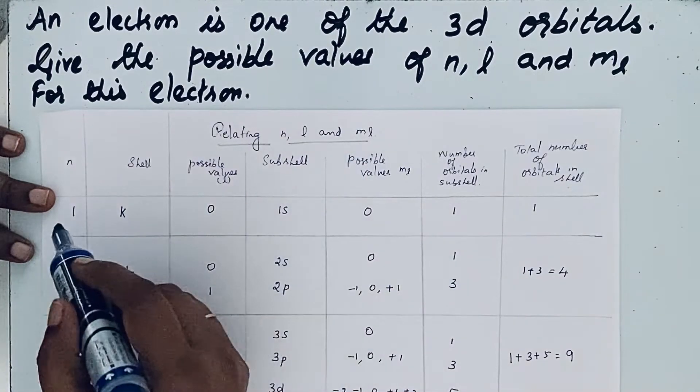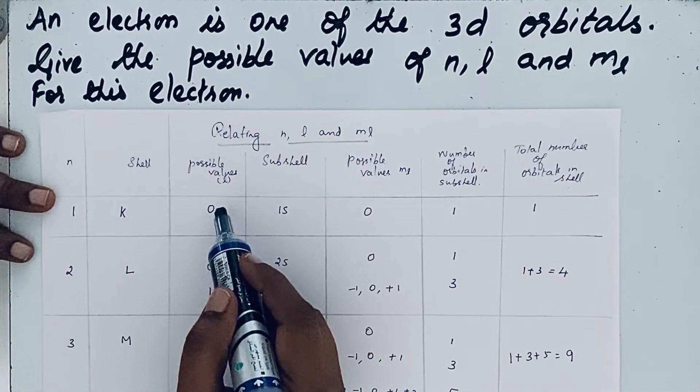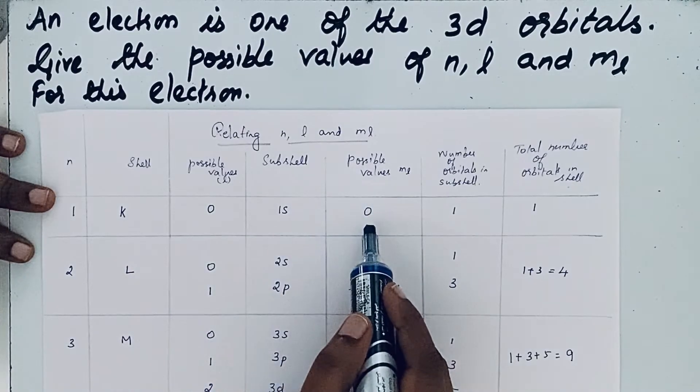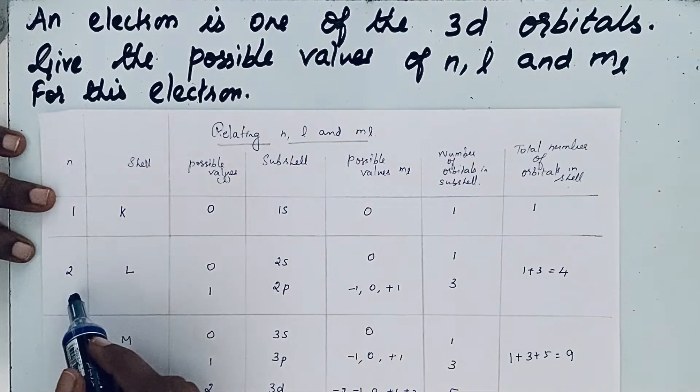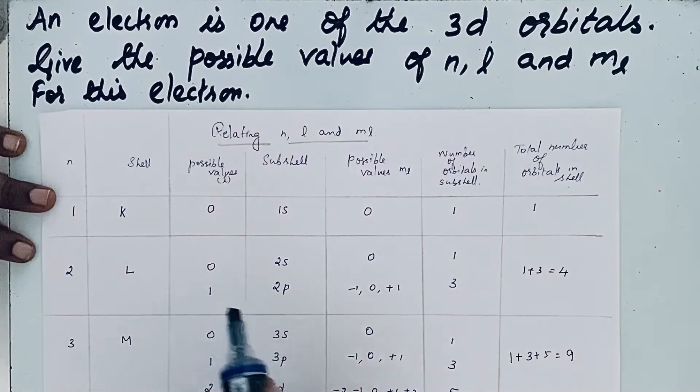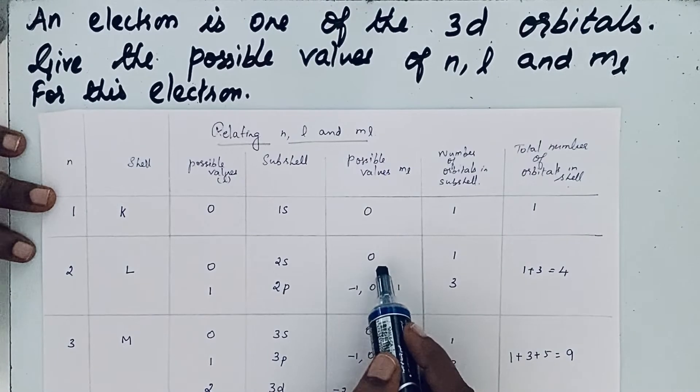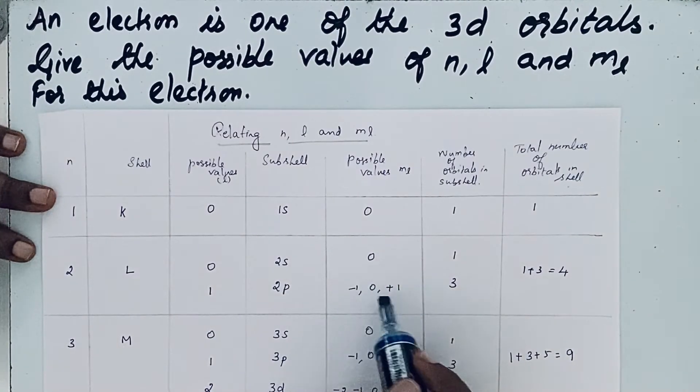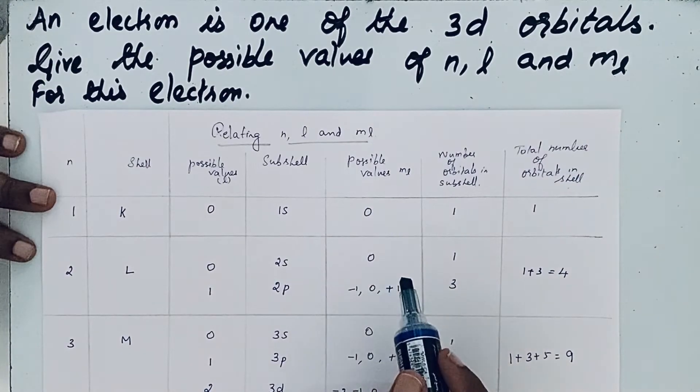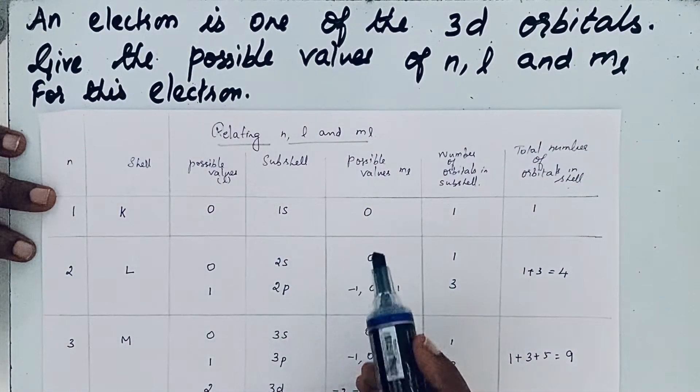If n equals 1, the possible value of l equals 0, and the possible value of ml is also 0. If n equals 2, then the possible value of l is 0 or 1, and the possible value of ml is 0, minus 1, 0, or plus 1. That means there is a relation between n, l, and ml.